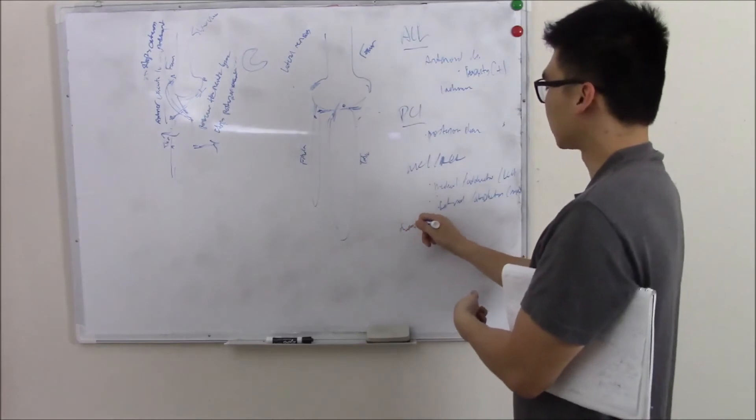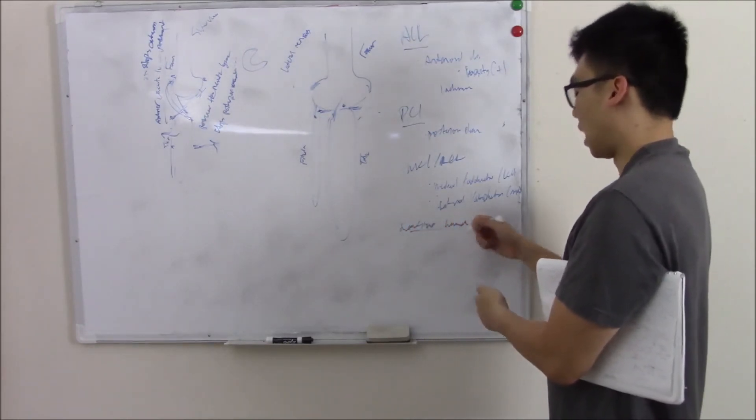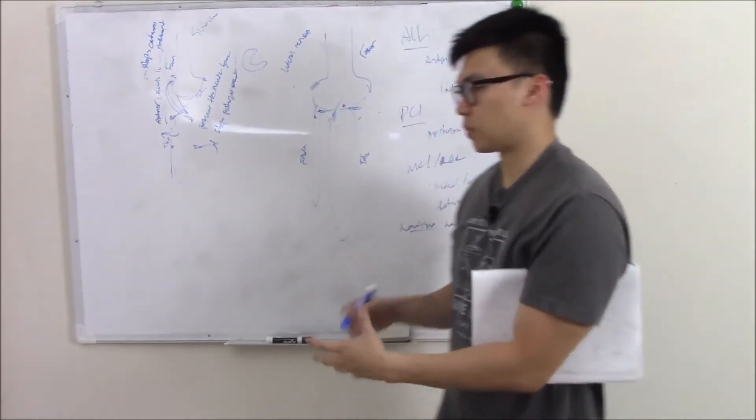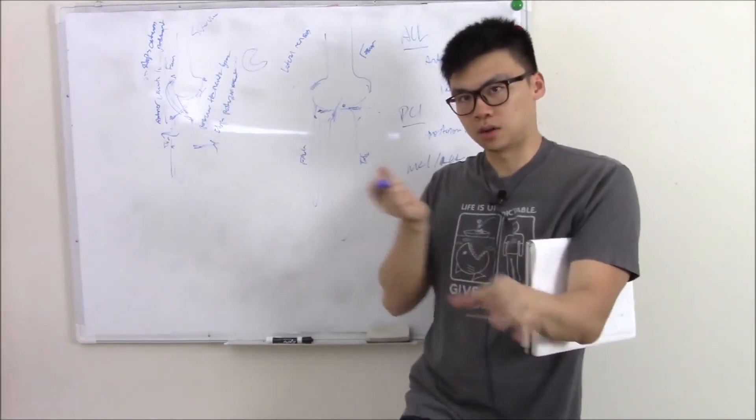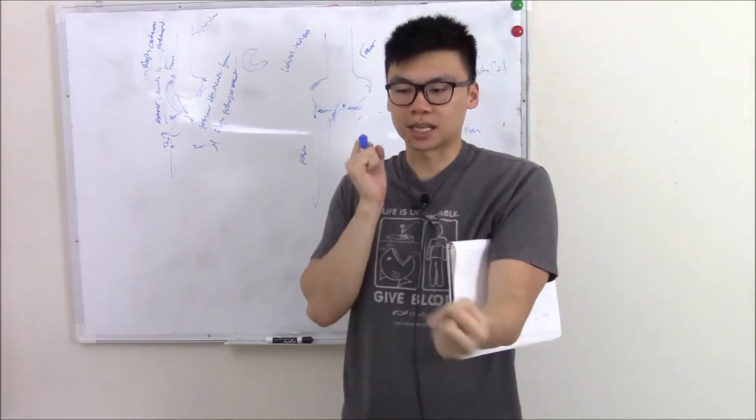Finally, your menisci. Your menisci is tested with the McMurray test. This is a little more complicated. I wish I could show you, but you can't really see my legs. You can look it up on YouTube. Basically, you twist the ankle and twist the knee and you're rocking it back and forth. You're trying to pin the menisci - pin the menisci and you're moving the knee back and forth.